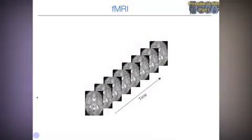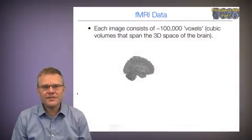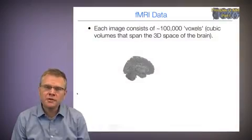So fMRI is, again, functional in the sense that it's measured continuously over time. So you measure the same brain volume multiple times across time. Each of these brain volumes consists of roughly 100,000 different voxels, which are cubic volumes that span the three-dimensional space of the brain.